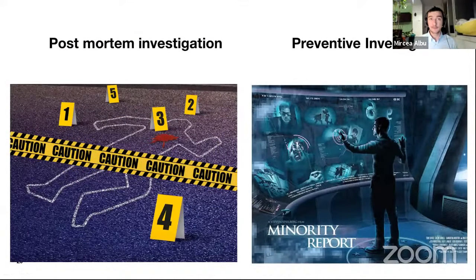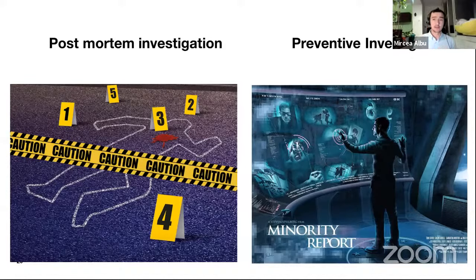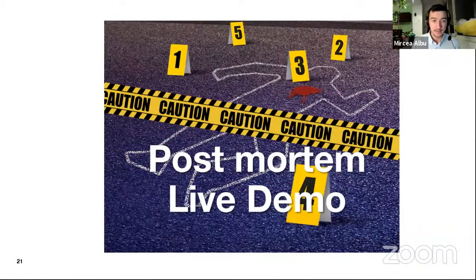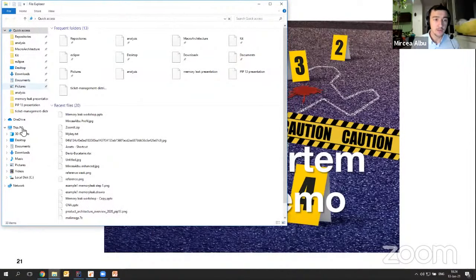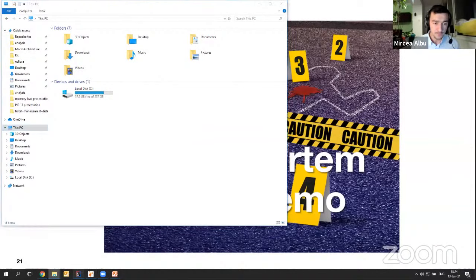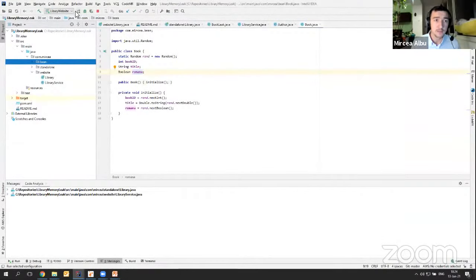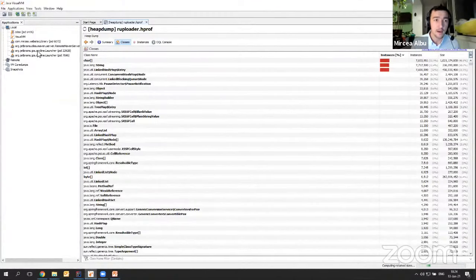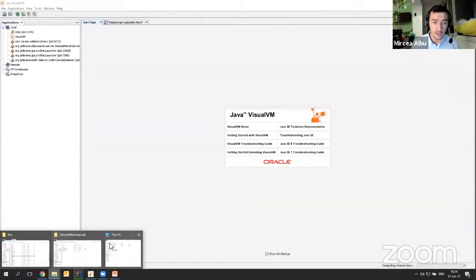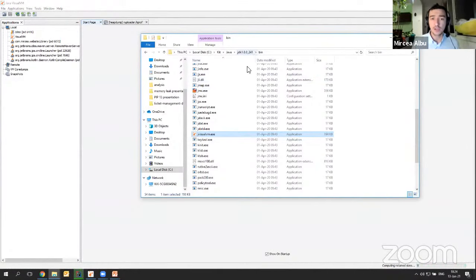Enough theory — let's start the fun part. I will split this webinar in two: first we'll do post-mortem investigation with two examples, and then we'll go to preventive investigation to find the memory leak before it crashes your application. I have a bad application here that creates a memory leak. This is how jVisualVM looks — you can find it in the JDK bin directory. On the left you have all JVMs open on your computer, and you can also investigate remote JVMs if JMX is exposed.